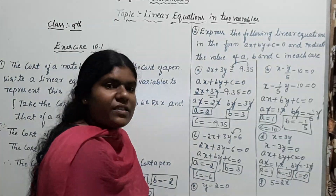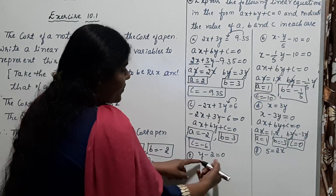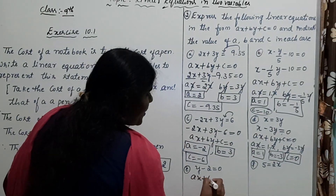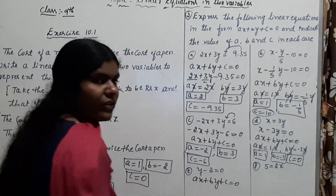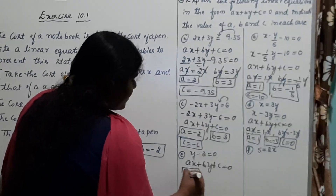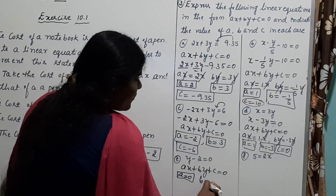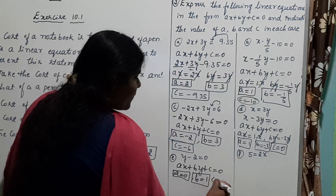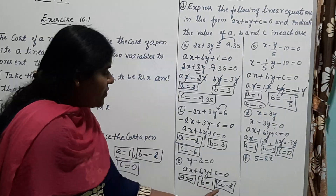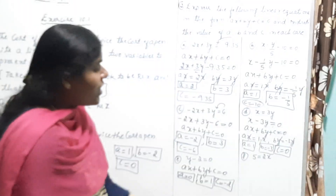The next question is y − 2 = 0. The x term is missing here. Comparing with the standard form AX + BY + C = 0: since x is not given, A = 0; the coefficient of y gives B = 1; and the constant term gives C = −2.